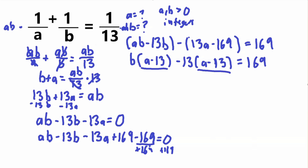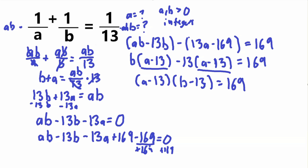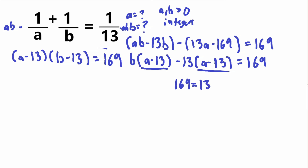Now these two groups both contain (a minus 13), so we can factor that out from both terms. Factoring out (a minus 13) leaves us with (b minus 13) from the remaining values. So we get (a minus 13) times (b minus 13) is equal to 169. Now to solve for a and b we need to know the factors of 169. We have 13 times 13, and also 169 times 1.